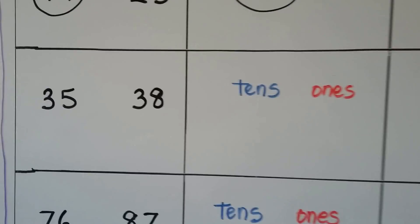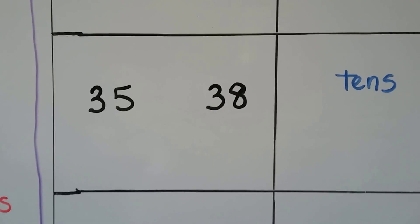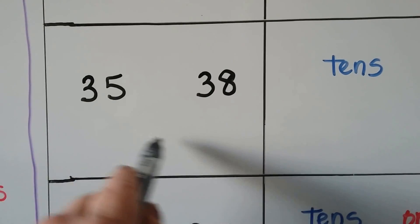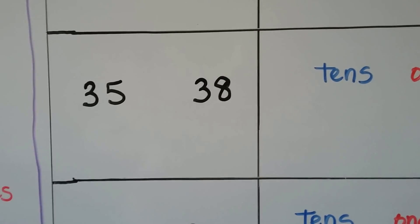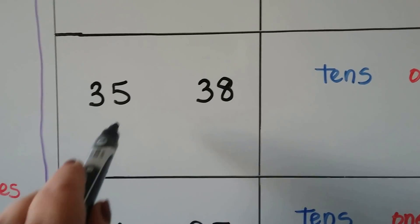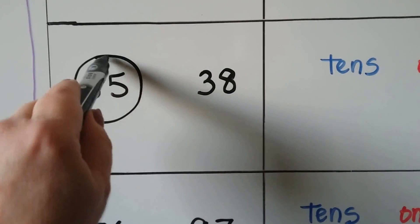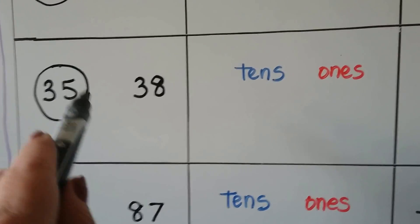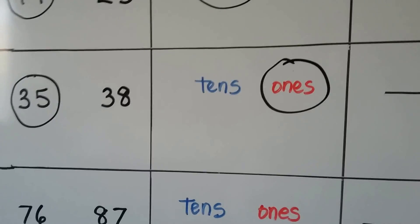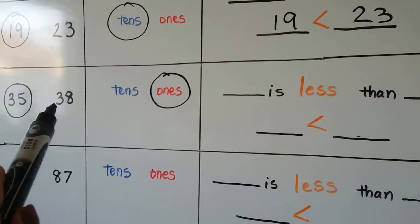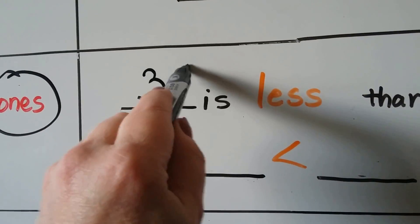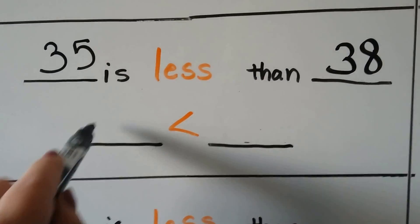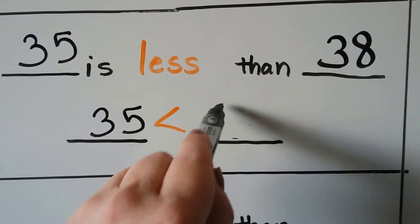Which one's less: thirty-five or thirty-eight? We look at the tens place — they both have a three, so we look at the ones place. This has five ones, this has eight ones. Five is smaller than eight, so this one is less. The ones place helped us because they had the same tens. Thirty-five is less than thirty-eight. We can write it using the symbol: thirty-five is less than thirty-eight.